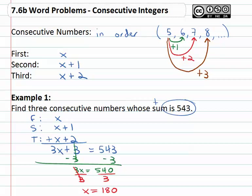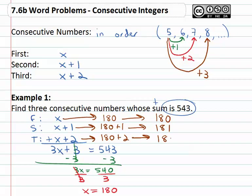Now we want to be careful, we were asked to find the three consecutive numbers. We've only found x, we need to make sure we find the actual solution. The first number is x or one eighty, so we know the first number is one eighty. The second number is x plus one or one eighty plus one, which we know is one eighty one. And the third number is one eighty plus two, giving us our third number one eighty two. We have three consecutive numbers, one eighty, one eighty one, one eighty two. Their sum is five forty-three.